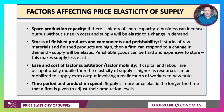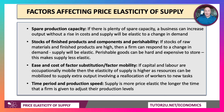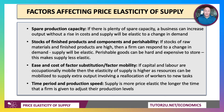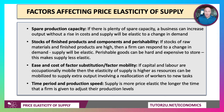The ease and cost of factor substitution and mobility is also key. If capital and labour are occupationally mobile, the elasticity of supply is higher because you can bring new resources into play quickly and reallocate workers to new tasks. Whereas immobility of factors of production makes supply less elastic. And crucially, supply tends to be more price elastic the longer the time period we give firms to adjust production levels.